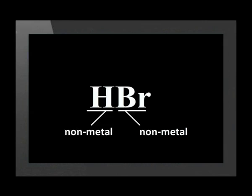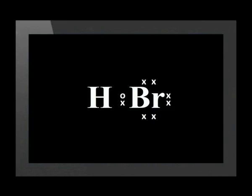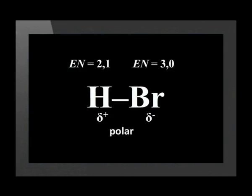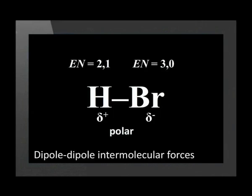Example two: what type of intermolecular forces exist between the molecules of hydrogen bromide? Again, all the atoms in the molecule are non-metals, so this molecule is covalently bonded — therefore there will be van der Waals forces between the molecules. The Lewis notation for the hydrogen bromide molecule shows it has a linear shape, but the unequal distribution of the shared electron pair — as a result of the difference in electronegativities between the two atoms — means that this molecule is polar. Because the molecules are polar, we can conclude that the intermolecular forces are van der Waals dipole-dipole forces.